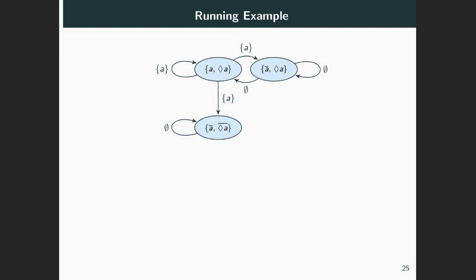Say we are in a scenario where both A and eventually A are false. From here we really cannot transit to any scenario where A or eventually A will be true, since this would contradict the current scenario which assumes that eventually A is false, meaning A will never be true. So in this scenario, we are doomed to stay with both A and eventually A forever false, meaning that this state only transits to itself.